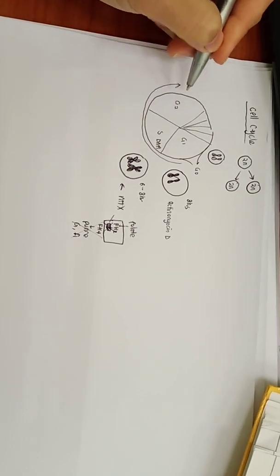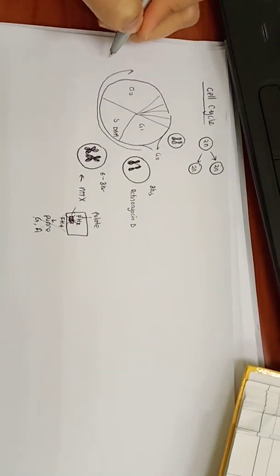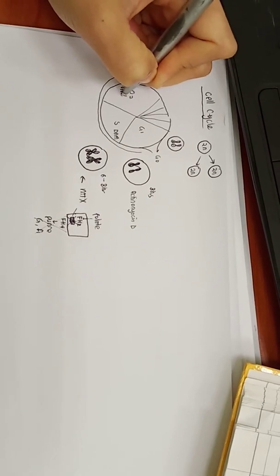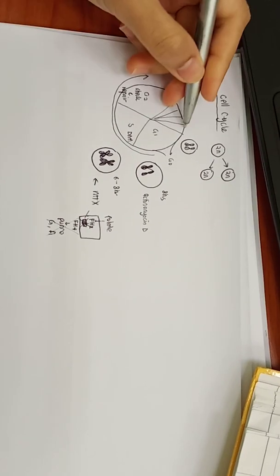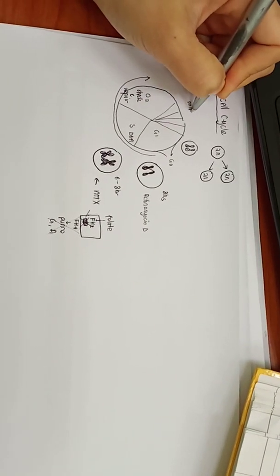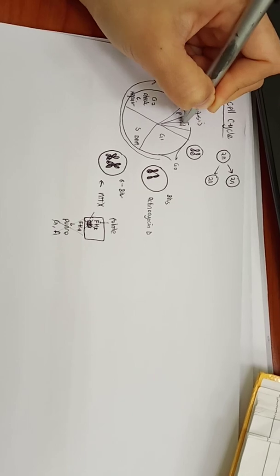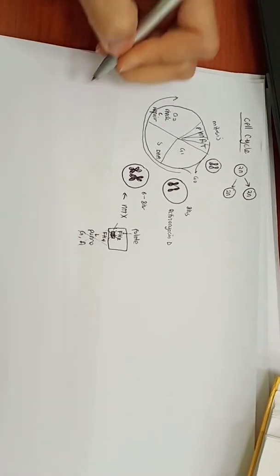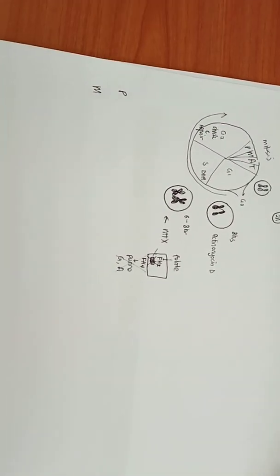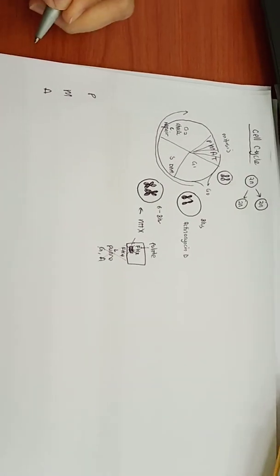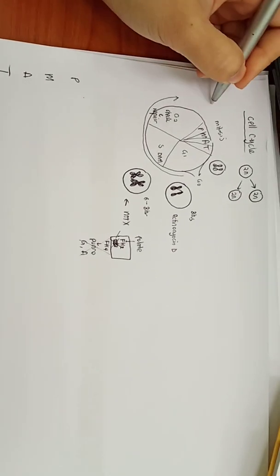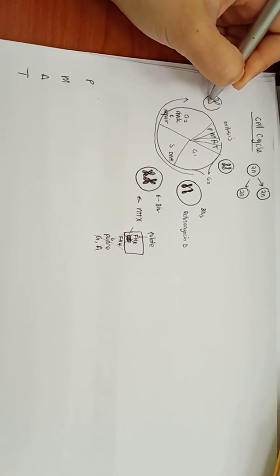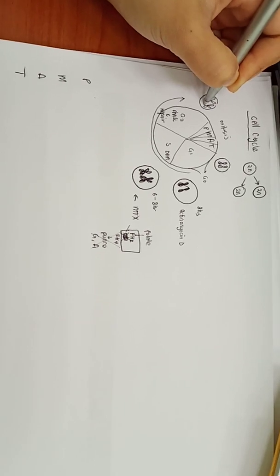After that, the cells go into G2 (growth two), which checks, counter-checks, balances, and repairs any genetic aberrations before entering mitosis. Mitosis consists of PMAT: prophase, metaphase, anaphase, and telophase. In G2, there is this check and balance before mitosis begins.